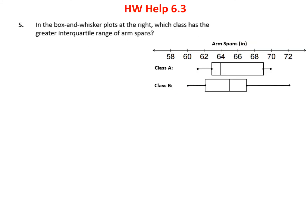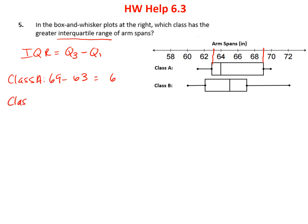Problem 5 says that in the box and whisker plots at the right, which class has the greater interquartile range? Remember, the interquartile range equals quartile 3 minus quartile 1. For class A, that's about 69 minus 63, which equals 6. For class B, it's going to be 67 minus 62, which equals 5. So the largest interquartile range is class A.